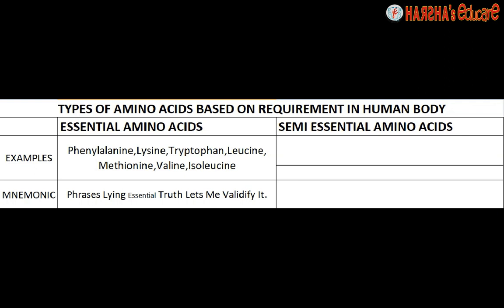Breaking down the mnemonic: PH stands for Phenylalanine, LY stands for Lysine, TR stands for Tryptophan, LEX or LE stands for Leucine, ME stands for Methionine, VAL stands for Valine, and I stands for Isoleucine. That covers all seven essential amino acids.